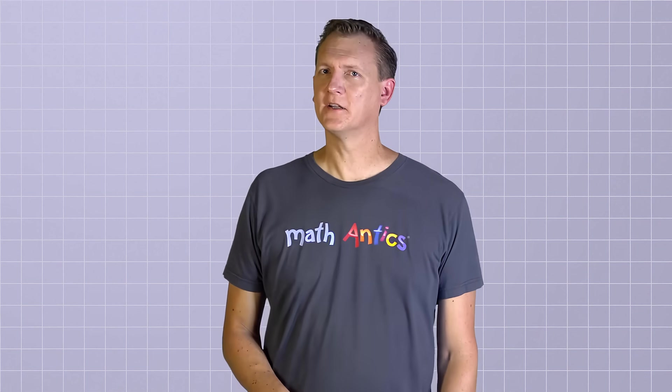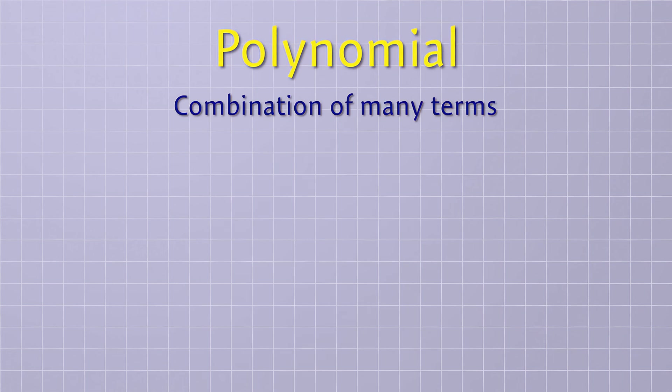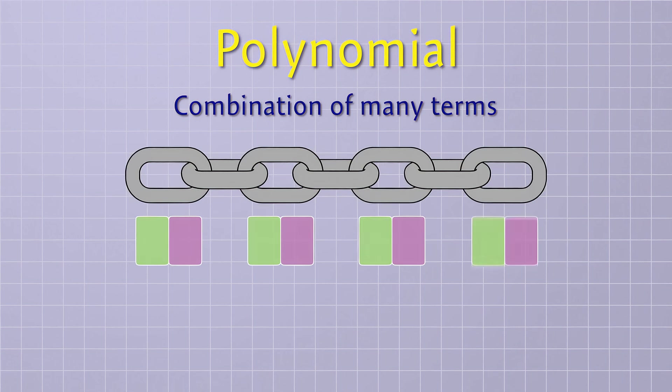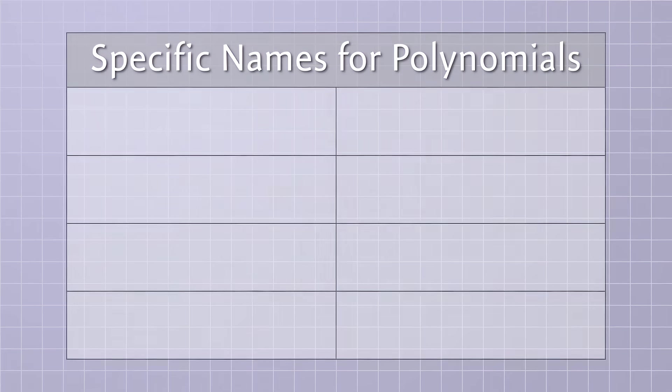Ok, so that's the basic idea of a term, but there's a little more to terms that we'll learn in a minute. First, let's see how this basic idea of a term helps us understand the basic idea of a polynomial. A polynomial is a combination of many terms. It's kind of like a chain of terms that are all linked together using addition or subtraction. The terms themselves contain multiplication, but each term in a polynomial must be joined by either addition or subtraction. And polynomials can be made from any number of terms joined together. But there are a few specific names that are used to describe polynomials with a certain number of terms.